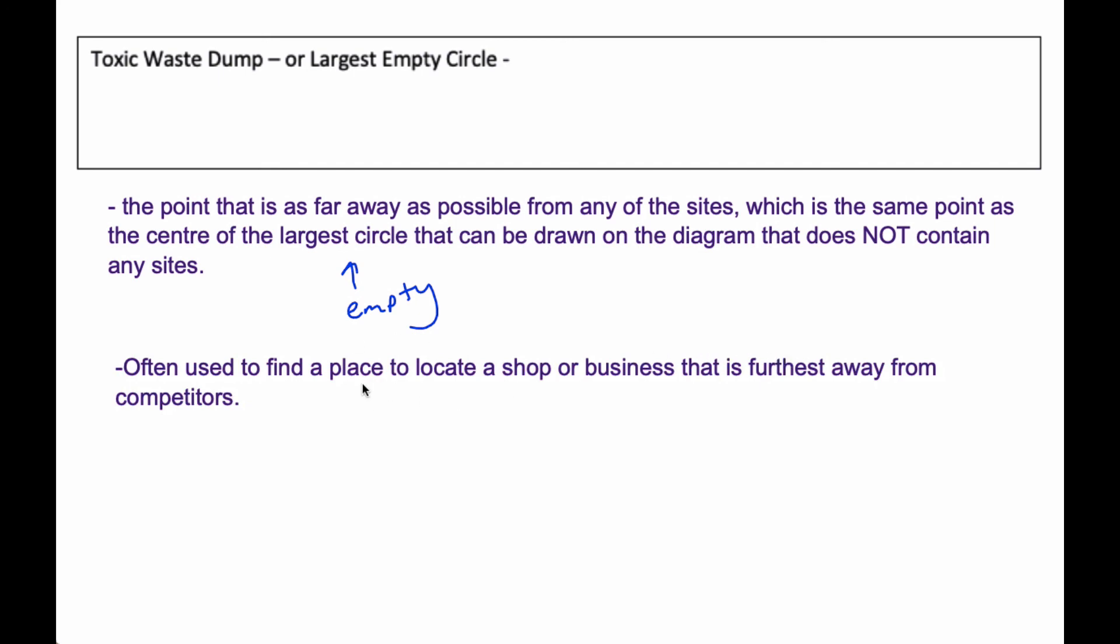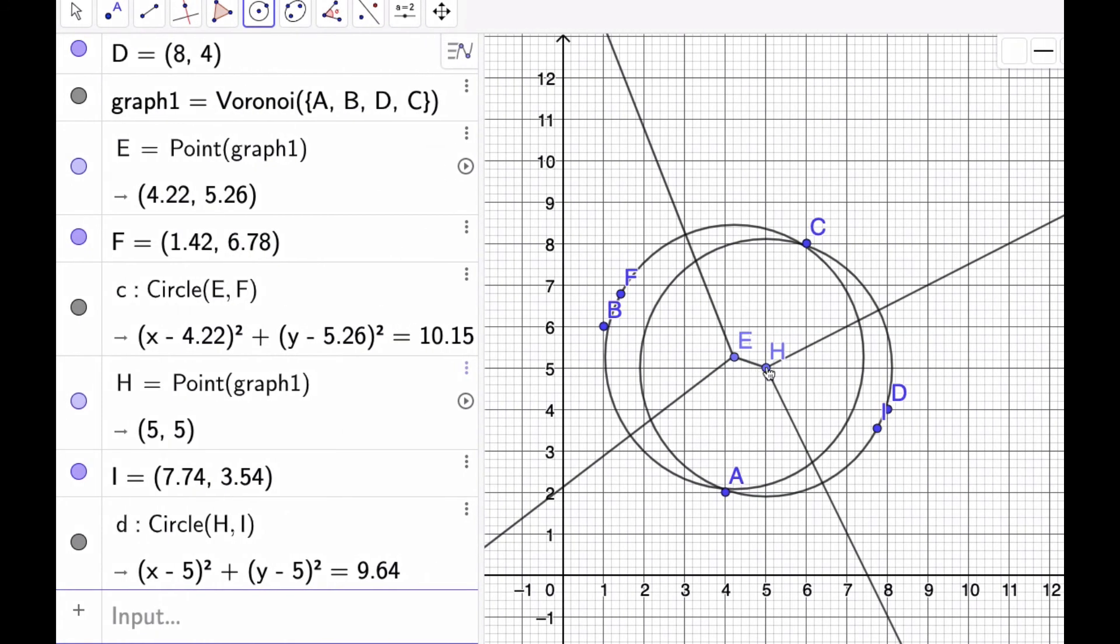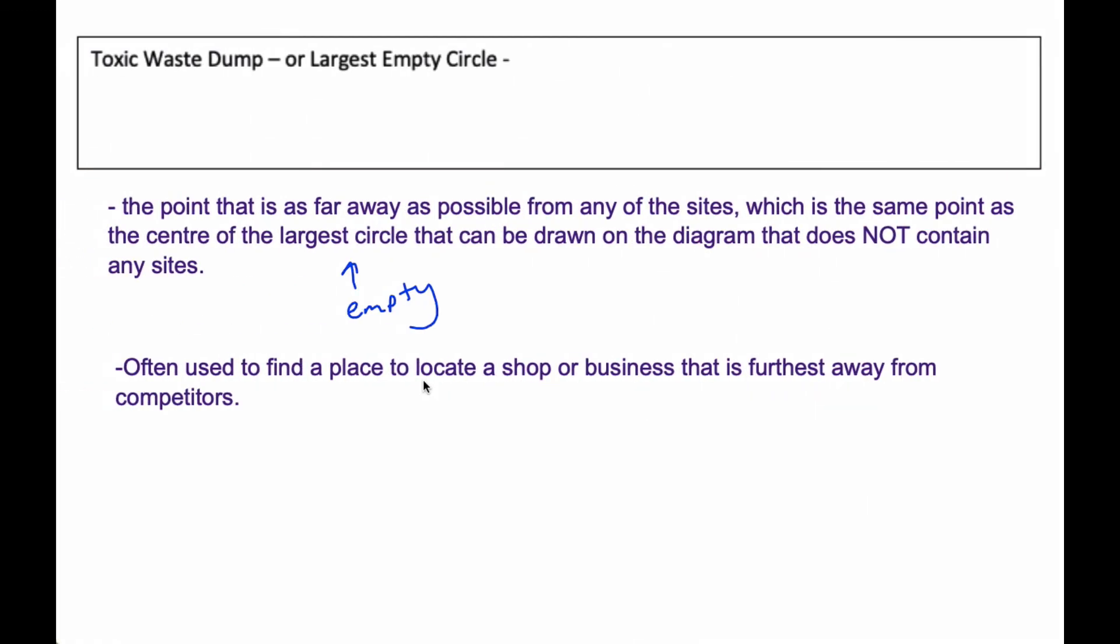but still within the city. So you can use it as well to put your shop at E. You're furthest away from any of your competitors when you're at this point E based upon this number being larger than that number, which is in essence the distance. So we're looking to have the biggest distance possible. And there's the idea of the toxic waste dump.